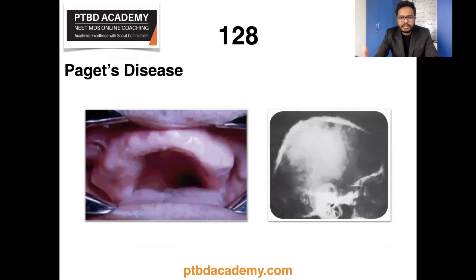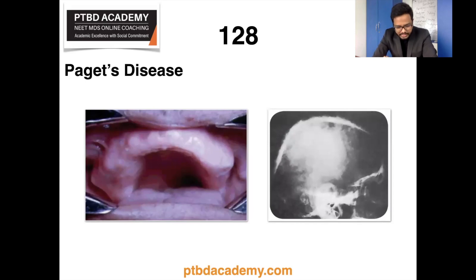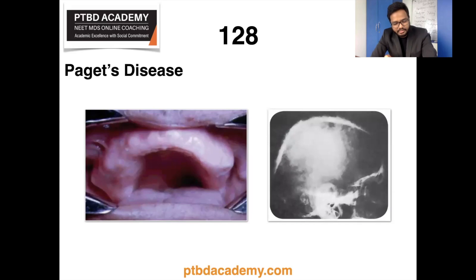Moving on, Paget's disease — there is a case showing enlargement of the right maxilla with the patient unable to use their denture. Radiographs of the skull show a typical cotton wool appearance, which is very important to remember. Paget's disease, also called Paget's disease of bone or osteitis deformans, was named after Sir James Paget, an English surgeon who described and originally named the condition. Excessive remodeling in Paget's disease gives rise to bones that are extensively vascularized, weak, enlarged, and deformed, with subsequent complications.